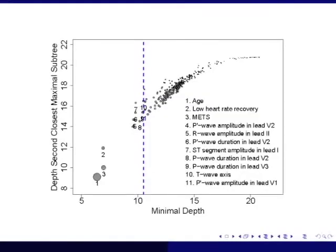Here's the analysis that we showed in our JASA paper. On the x-axis is the minimal depth, the first-order statistic. On the y-axis, I've also plotted the second-order statistic, the depth to the second-closest maximal subtree. This big dashed blue line here is the minimal depth threshold, the mean under the null distribution. So all these variables here are considered to be significant under this threshold rule: one, two, and three—age, low heart rate recovery, METS which is exercise capacity age-adjusted and gender-adjusted, and then a bunch of variables that are sort of sitting in the middle, and lo and behold, they're all ECG-based.